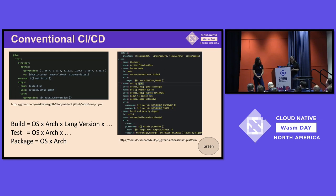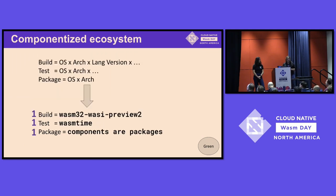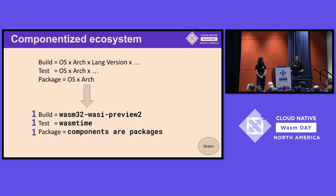But in a componentized ecosystem, we would only build once because we're building one portable target architecture. When we test, we only need to test on our runtime once. And when we package — well, we're already packaged. That's what's cool: components are packages. I don't need to run a bunch of numbers to say this could really change the way we write software in a way that developers genuinely want and need.